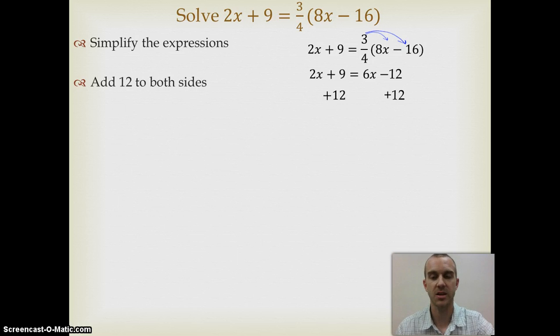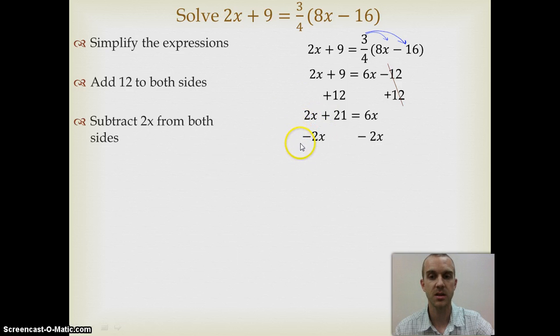Now I have just basic variables and constants, and I'm going to simplify. First, I'm going to add 12 to both sides. That cancels out my 12s right here, and I did it to both sides. So now I have 2x plus 21 equals 6x. Now I'm going to subtract my 2x from both sides to get my variables together. And then my last thing is I want to get this to 1x, so I divide by 4.